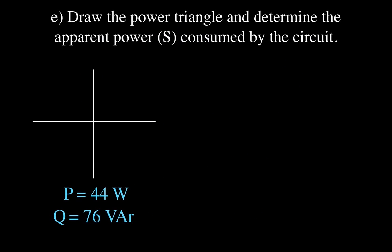Now we draw the power triangle and determine the apparent power. We draw real power P along the positive x-axis — similar to how resistance is drawn in the impedance triangle. Since this is an inductive circuit with reactive power, we draw Q along the positive y-axis. Adding these vectorially gives the apparent power S as the hypotenuse of that right triangle.